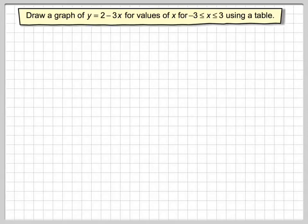Okay, another video about drawing straight-line graphs from tables. We need to draw a graph of y equals 2 minus 3x for values of x from minus 3 to 3. This says that x has to be between minus 3 and 3 using a table. There are different methods of drawing this graph, but we're being asked to use the table method.